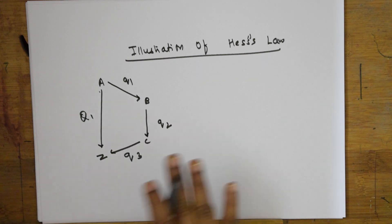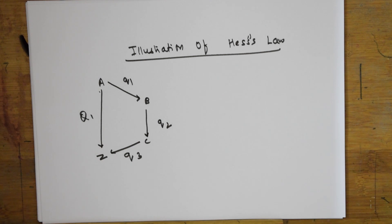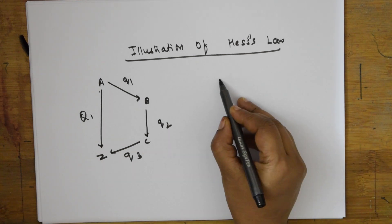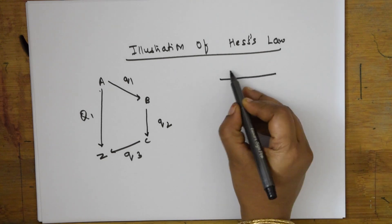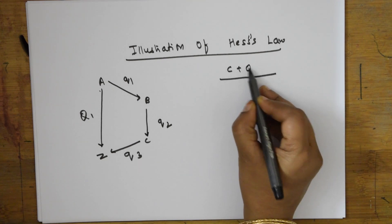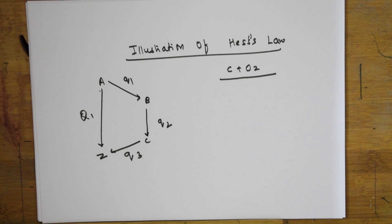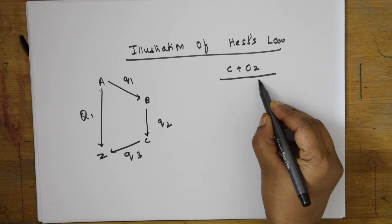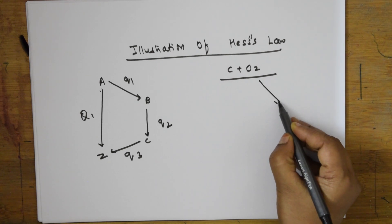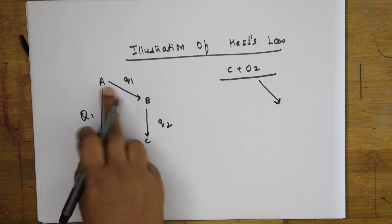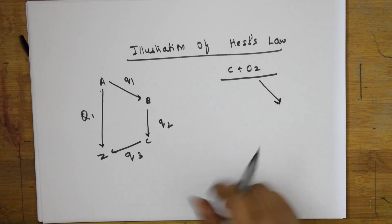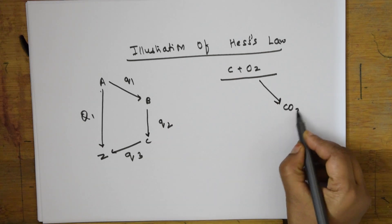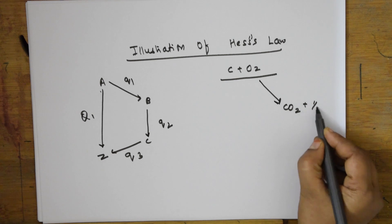Now let us take an example for carbon dioxide formation. Carbon is combining with oxygen. I'm doing this step by step. First, in this step, carbon plus half oxygen forms carbon monoxide. Here, delta H value equals minus 26.42 kilocalories per mole.